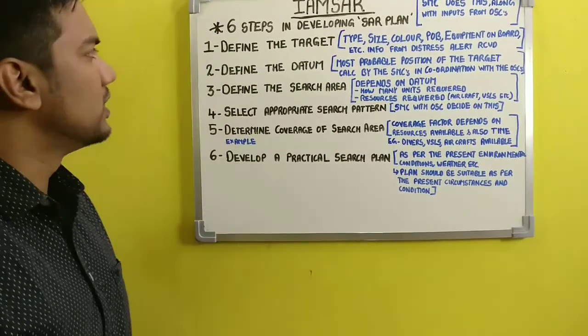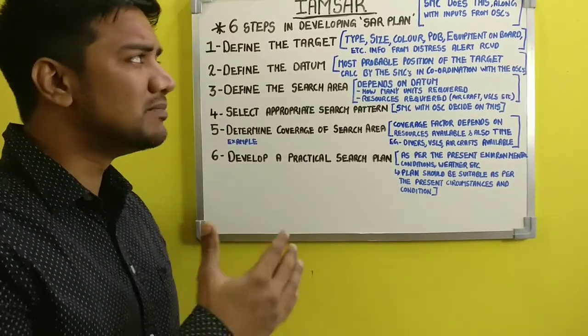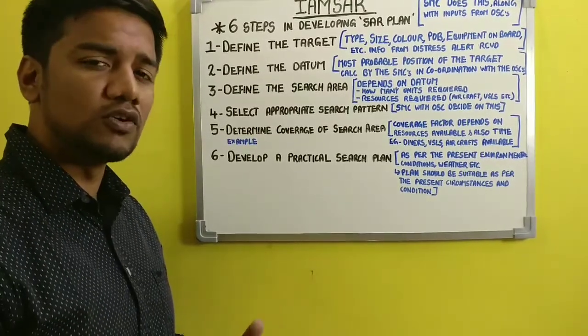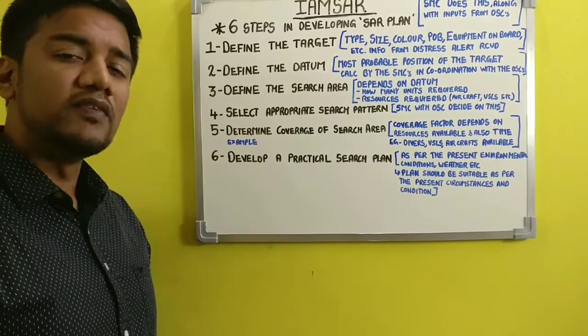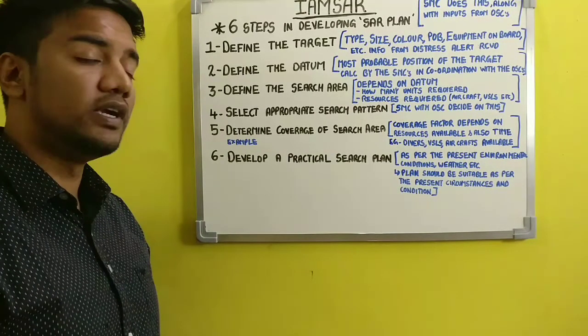The next topic is the six steps in developing a search and rescue plan. The SMC does this along with inputs from on-scene coordinators. The six steps are: number one, define the target; number two, define the datum; number three, define the search area; number four, select appropriate search pattern; number five, determine coverage of the search area; and number six, develop a practical search plan.